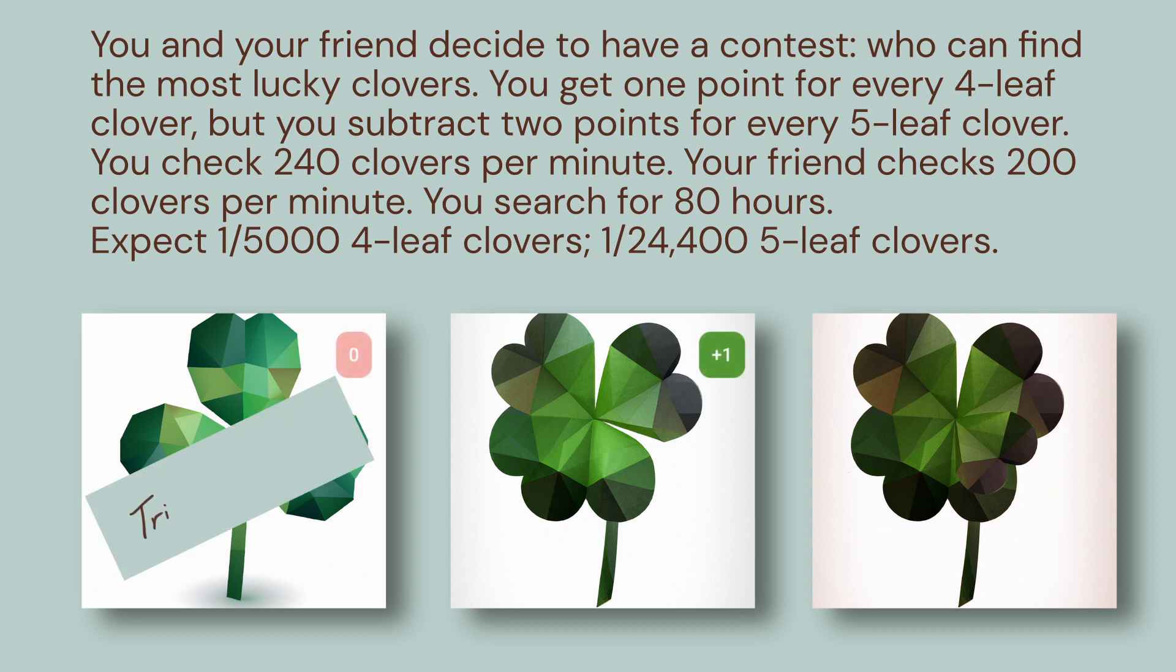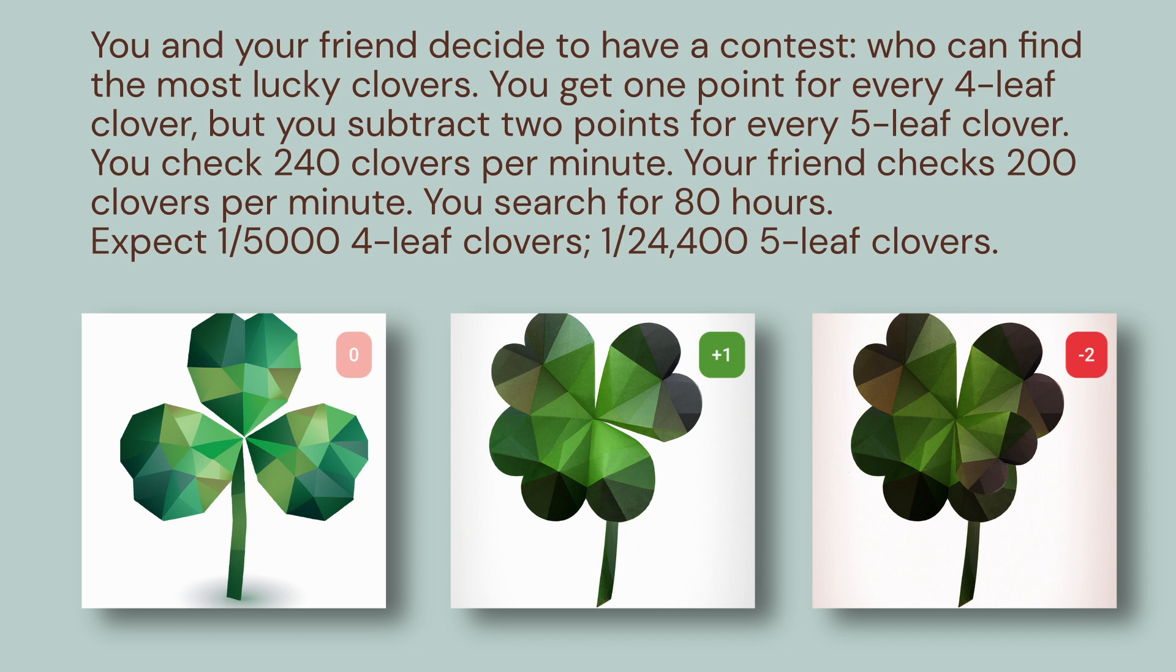You get one lucky point for every four-leaf clover you find, but you subtract two points for every five-leaf clover you come across. You're a little faster than your friend. You can check 240 clovers per minute, while your friend checks 200 clovers per minute.